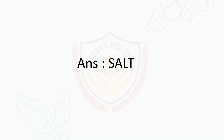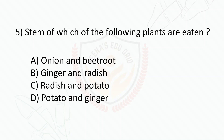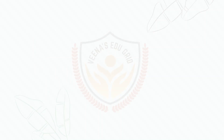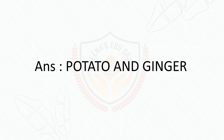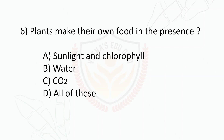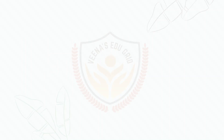Stems of which of the following plants are eaten: onion and beetroot, ginger and radish, radish and potato, or potato and ginger? The answer is potato and ginger. Plants make their own food in the presence of sunlight, chlorophyll, water, CO2, or all of these? The answer is all of these.